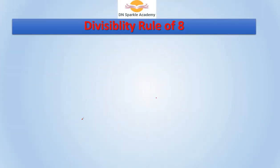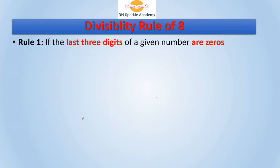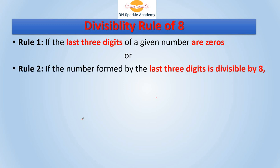Divisibility rule of 8: Rule number 1 — if the last 3 digits of a given number are 0, then it is divisible by 8. Rule number 2 — if the number formed by the last 3 digits is divisible by 8, then the whole number is divisible by 8.